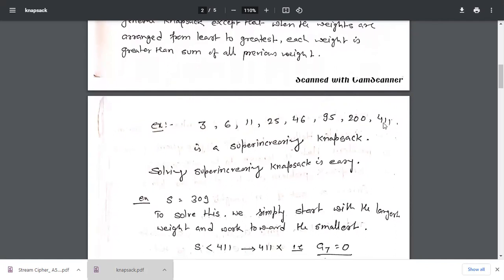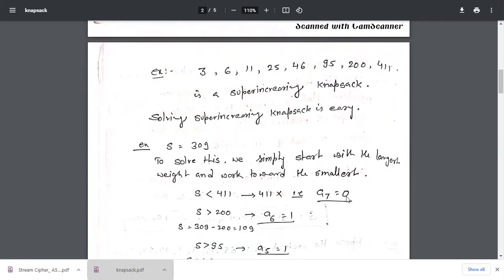First we will check with 411. S is 411. Here S is given 309 and 411, so S is less than 411. So this weight should be 0. Here is a7, so a7 should be 0. Then we will compare with the next largest number, which is 200. 200 is less than 309, so a6 should be 1.